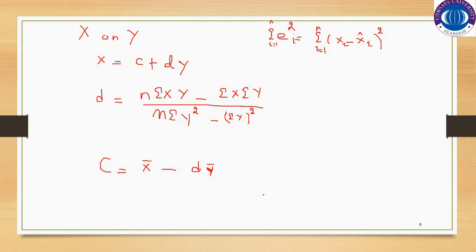By substituting the values into these two formulas, we get the estimates of the parameters and we can fit the line. When we substitute these values, this gives x hat equal to c plus d into y.